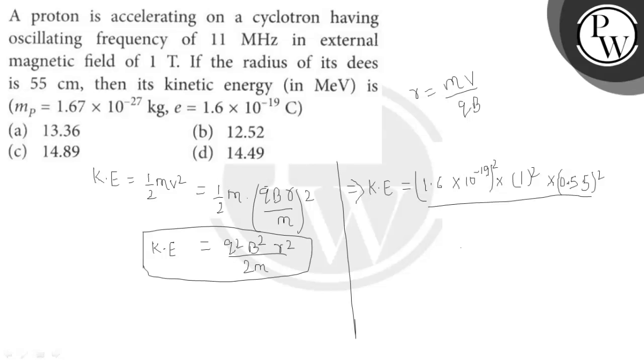Divided by 2 times mass of proton. Mass of proton is 1.67 into 10 to the power minus 27. This will give us the result in joules.